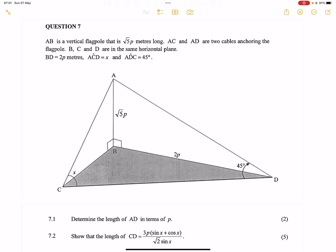They say AB is a vertical flagpole that is root 5p meters long, AC and AD are two cables anchoring the flagpole. BC and D are in the same horizontal plane, and as you can see they've shaded it there to show you that that's a horizontal plane. They say BD is 2p meters and ACD is equal to x, as well as ADC is 45 degrees.